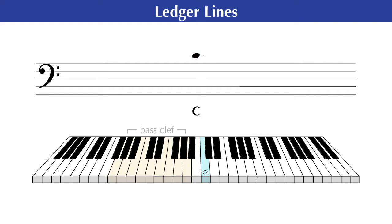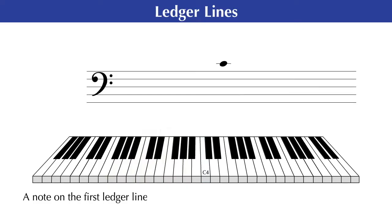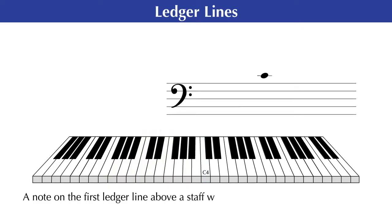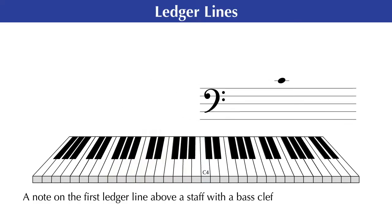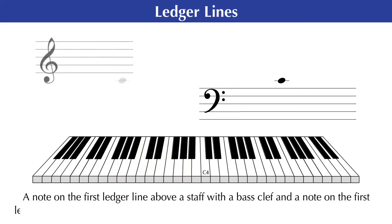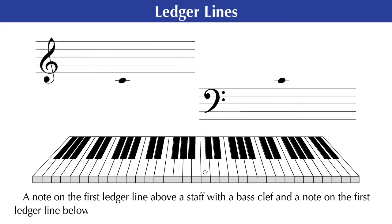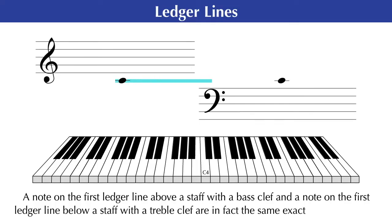Now it is important to know that a note on the first ledger line above a staff with a bass clef and a note on the first ledger line below a staff with a treble clef are in fact the same exact pitch, middle C.